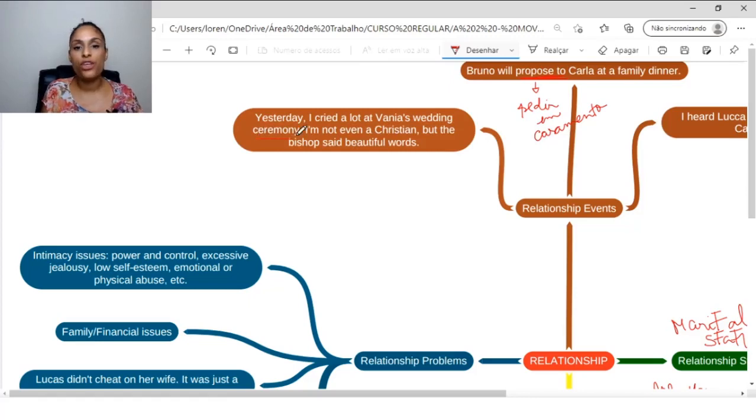Bruno will propose to Carla at a family dinner. Bruno will propose to Carla. Propose to means to ask in marriage. Ask in marriage. And we have another one here: Yesterday I cried a lot at Vânia's wedding ceremony. So, we're talking about the wedding ceremony. Wedding. Whose? Whose? Vânia's. That's why we have this apostrophe and this S here, showing possession. I'm not even a Christian. I'm not even a Christian. But the bishop said beautiful words. The bishop, the bishop is the pastor. Bishop, actually. The bishop. But the bishop said beautiful words.